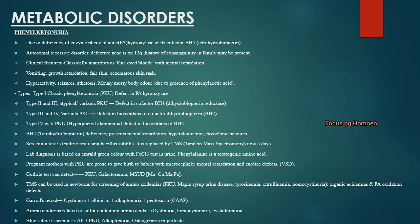The Garrod tetrad includes cystinuria, albinism, alkaptonuria and pentosurea — mnemonic CAP. Amino acidurias related to sulfur-containing amino acids are cystinuria, homocystinuria and cystinosis. Blue sclerae are seen in all variants of PKU plus in alkaptonuria and osteogenesis imperfecta.